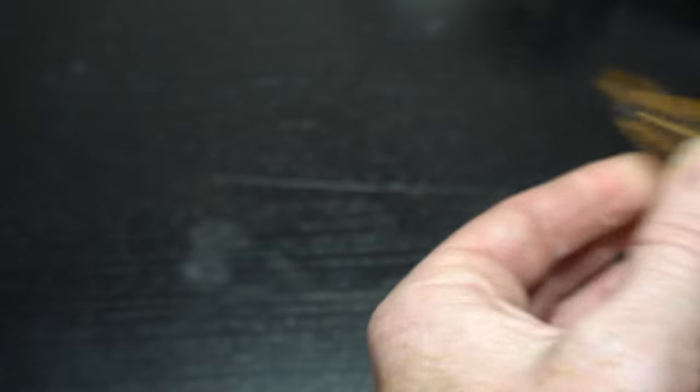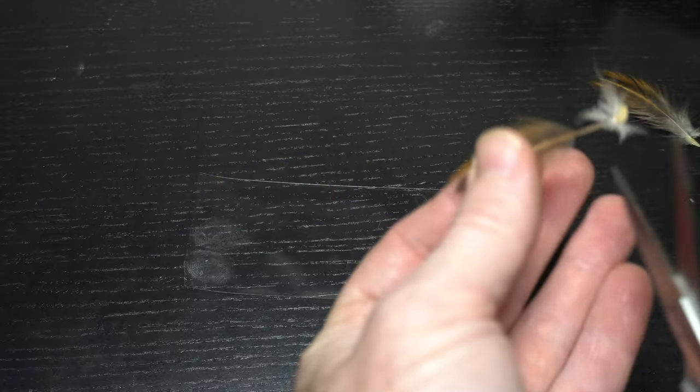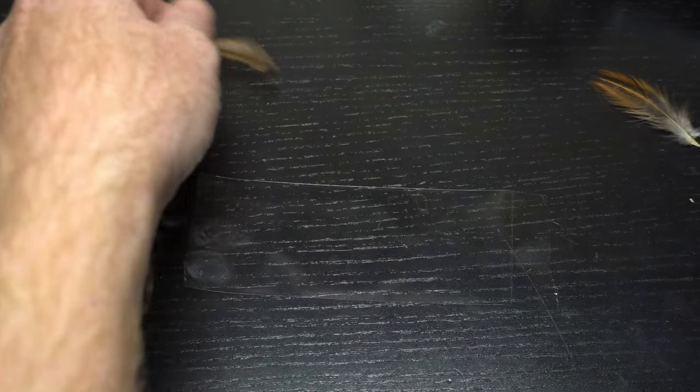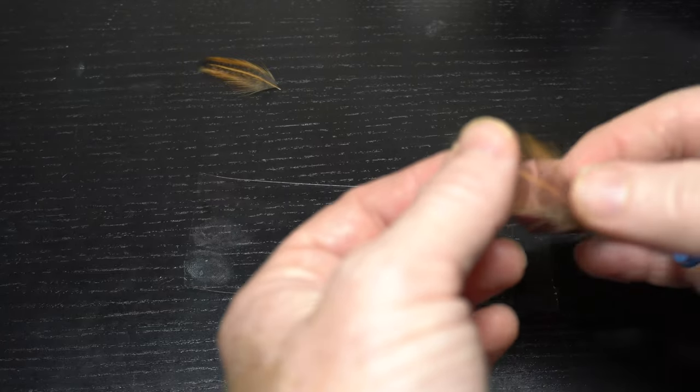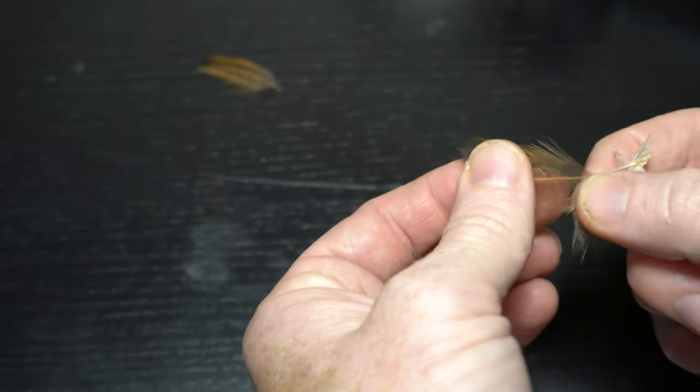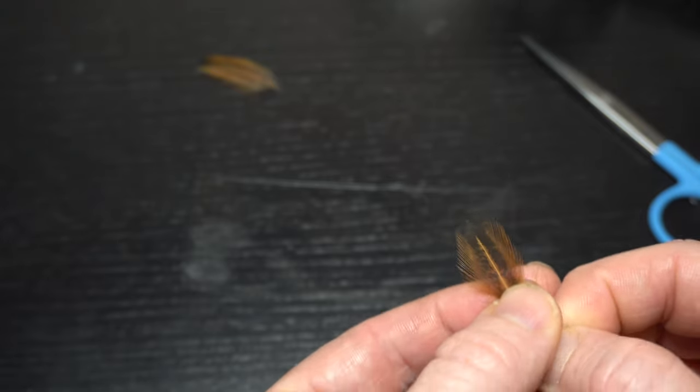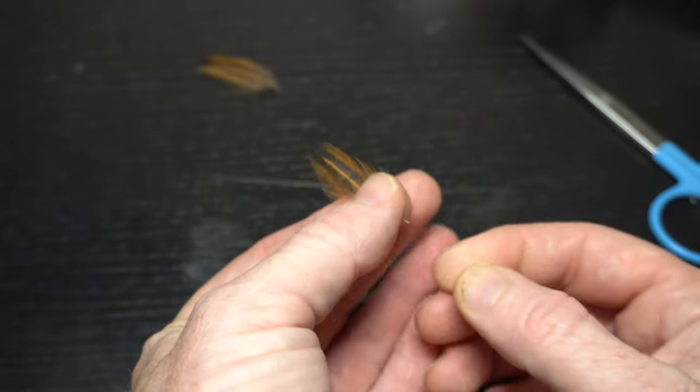And then I find it's easier just to strip off the bottom part. Grab a pair of scissors, cut off that stem. We'll do that with both. I'm doing two at a time, you could probably do more if you wanted, if you were going to tie a bunch, or maybe one. And there we go.